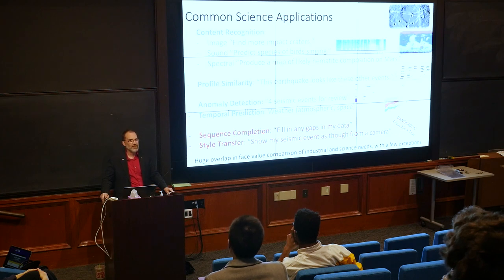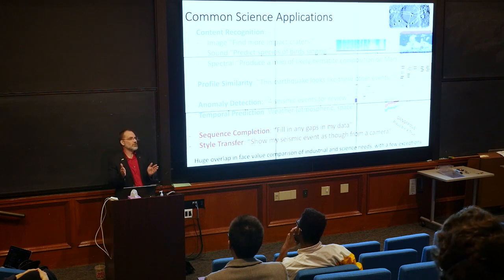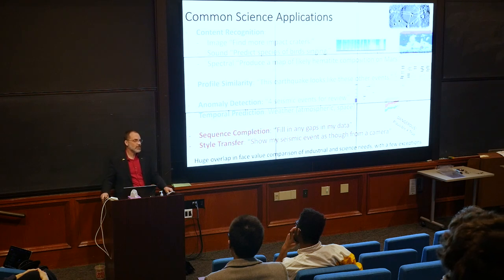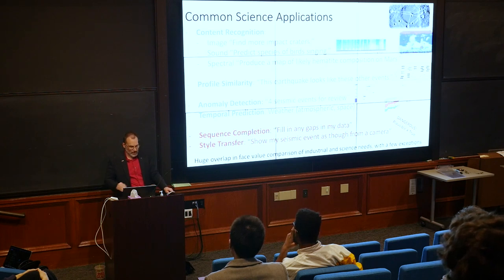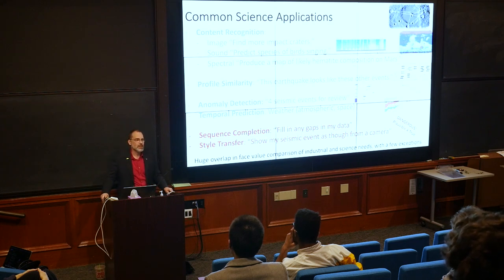Anomaly detection: here's an entire record of GPS data, but there are four seismic events for review. Temporal prediction: weather — here's what happened before, here's what's coming next. All of those are great matches. But the last two applications are where things get dangerous for science. When you use sequence completion for science you end up doing what I call deep fake science data: 'fill in any gaps in my data.' ML will make a system that can do that, but the answer isn't right — it just looks right, because that's what it was trained to do. This is exactly what ChatGPT does.